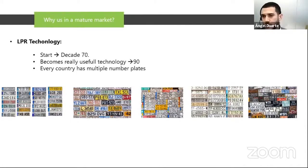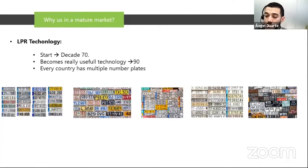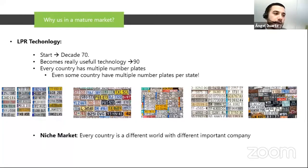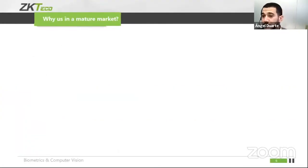Every country has multiple number plates. If you think of your own country, you have normal car number plates, motorbike plates depending on cylinder size, police number plates, diplomatic plates — a lot of different number plates in each country. Imagine the difficulty if you want to be in every country in the market. For that reason, it's a really niche market. Every country in the world has companies that are more powerful in this technology. In Spain I can think of three or four big companies, in France two, in the United Kingdom good ones as well. Why us? That's the question.